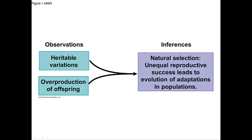Observation two is overproduction of offspring. All species can produce far more offspring than the environment can support. Competition for resources, then, is inevitable, and many of these offspring will fail to survive and reproduce.